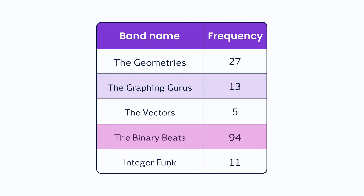Notice that The Binary Beats got the most votes, so you can already tell that this was the most popular band name. To find the relative frequencies here, you'll calculate the proportion of votes each band name got out of the total number of votes. In order to find the relative frequencies, you need to know how many students were asked to vote. You were told there were 150, but it would be smart to sum the frequencies to double check.